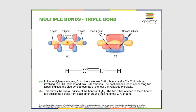Since it's only sp hybridized, there are two unhybridized p orbitals, shown here in blue and red. This time the pi bond not only occurs above and below the atom, but also inside and outside of the page. These p orbitals inside and outside of the page also overlap with each other to form a second pi bond. So in a triple bond we have one sigma and two pi bonds.